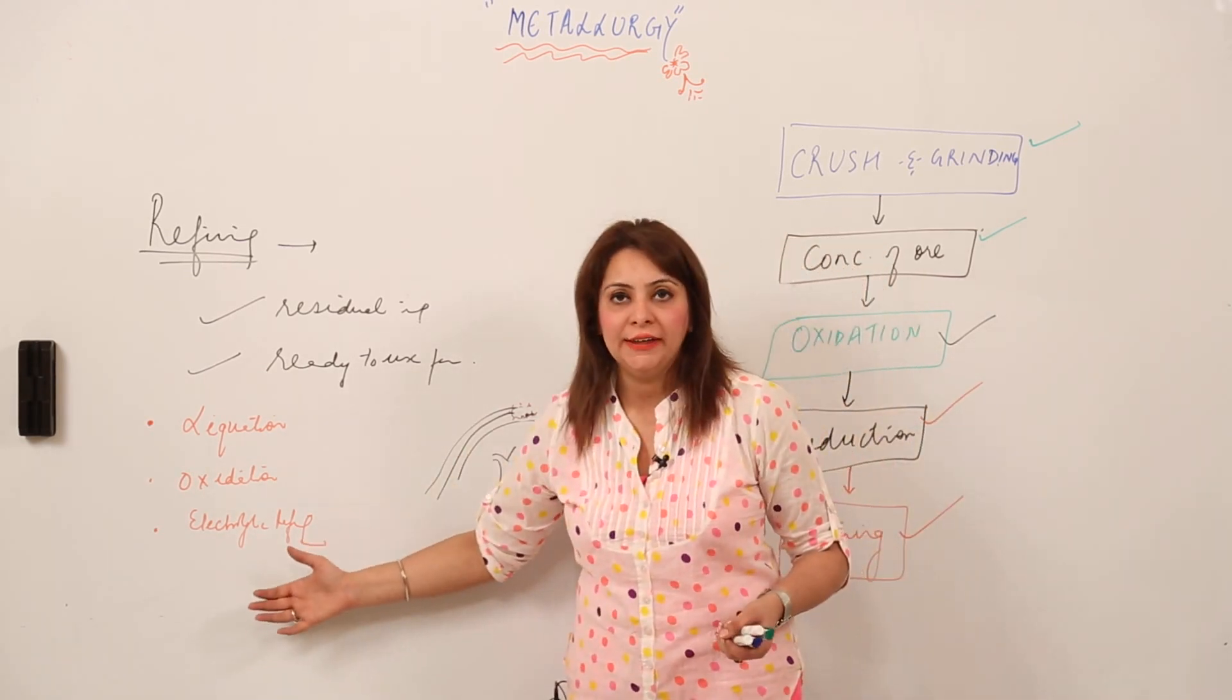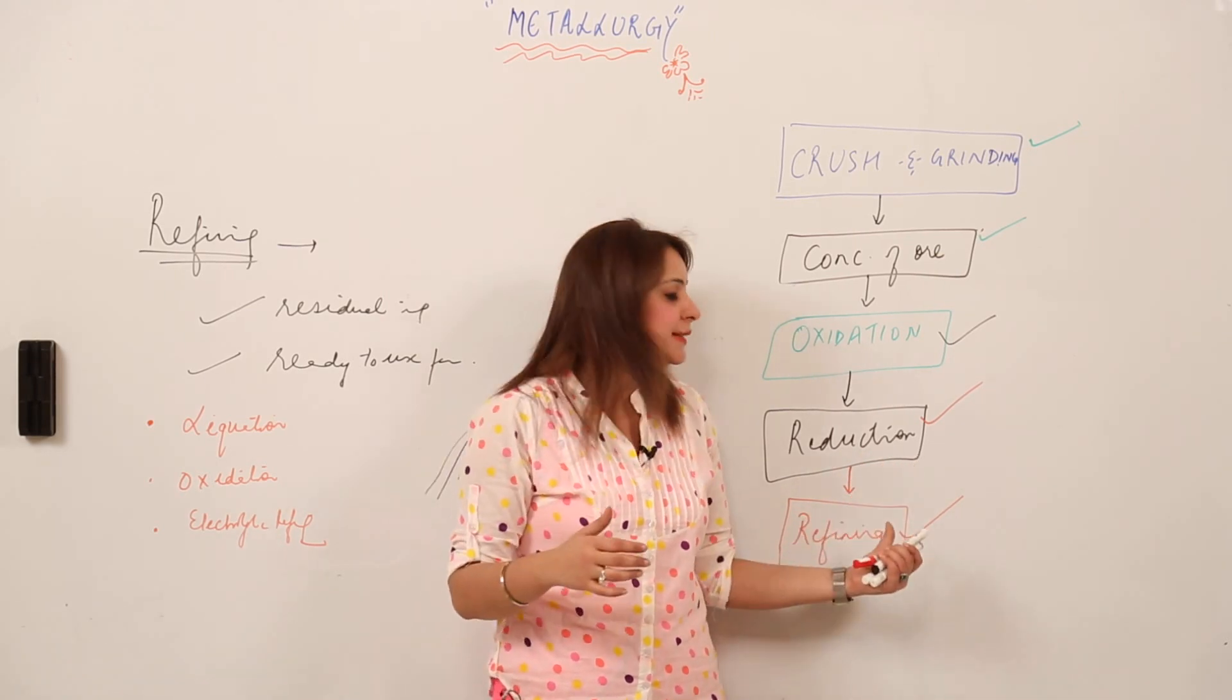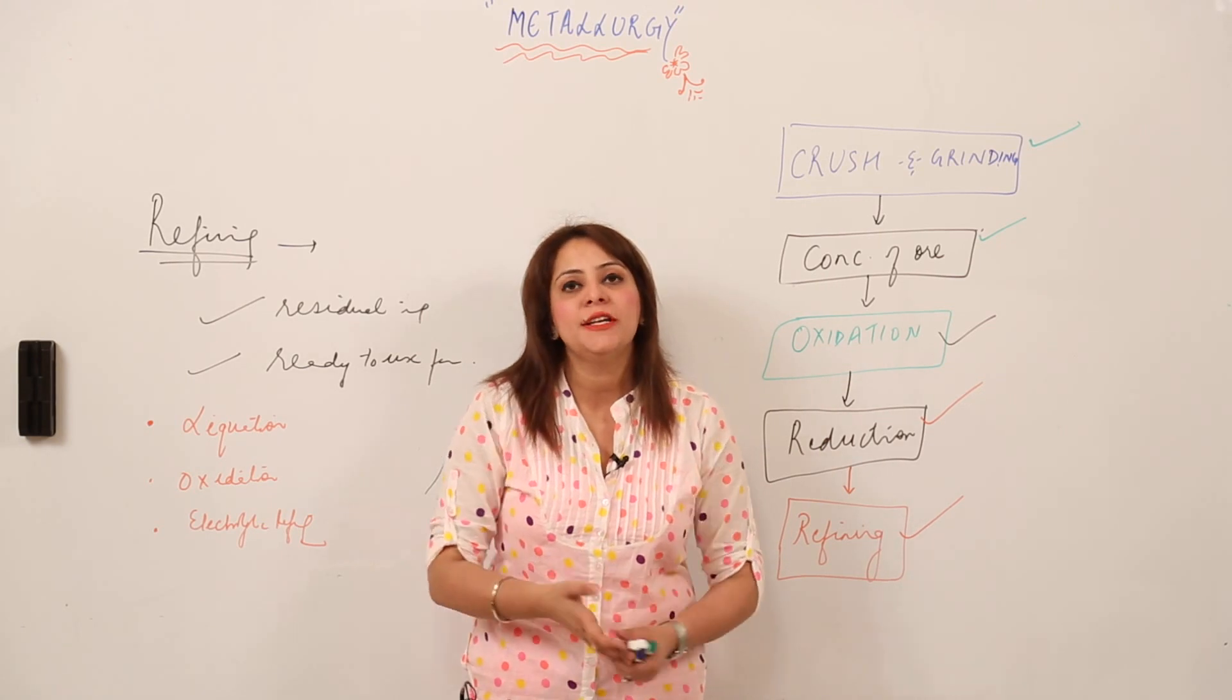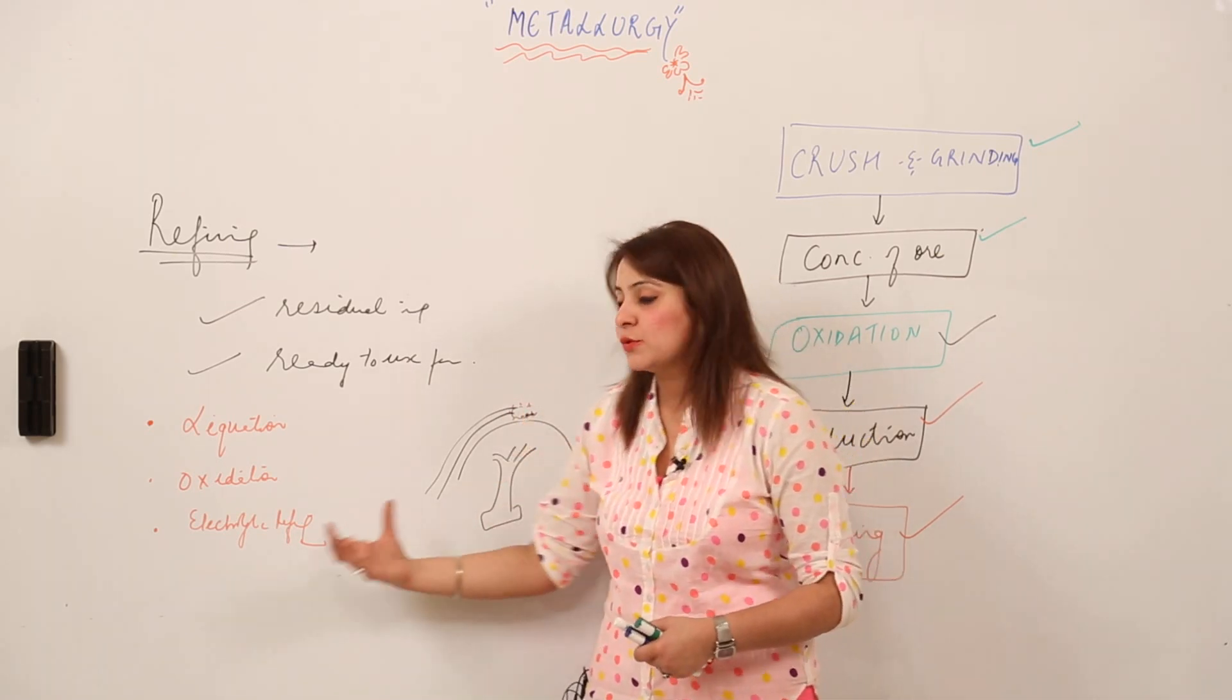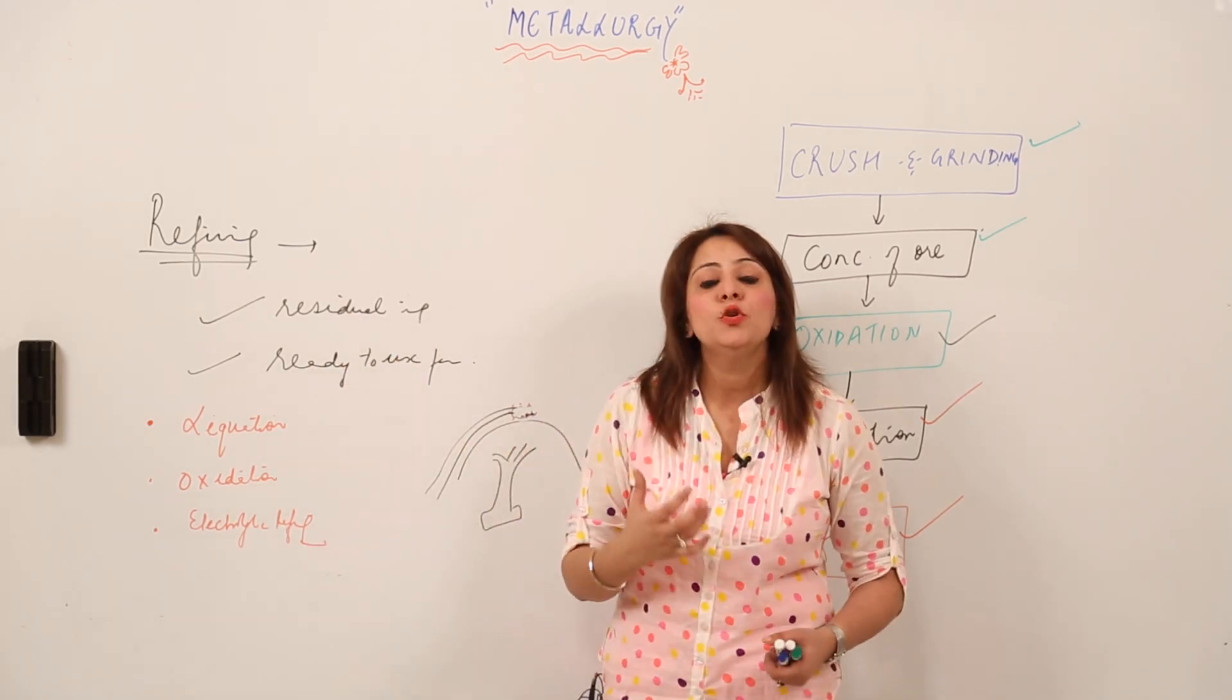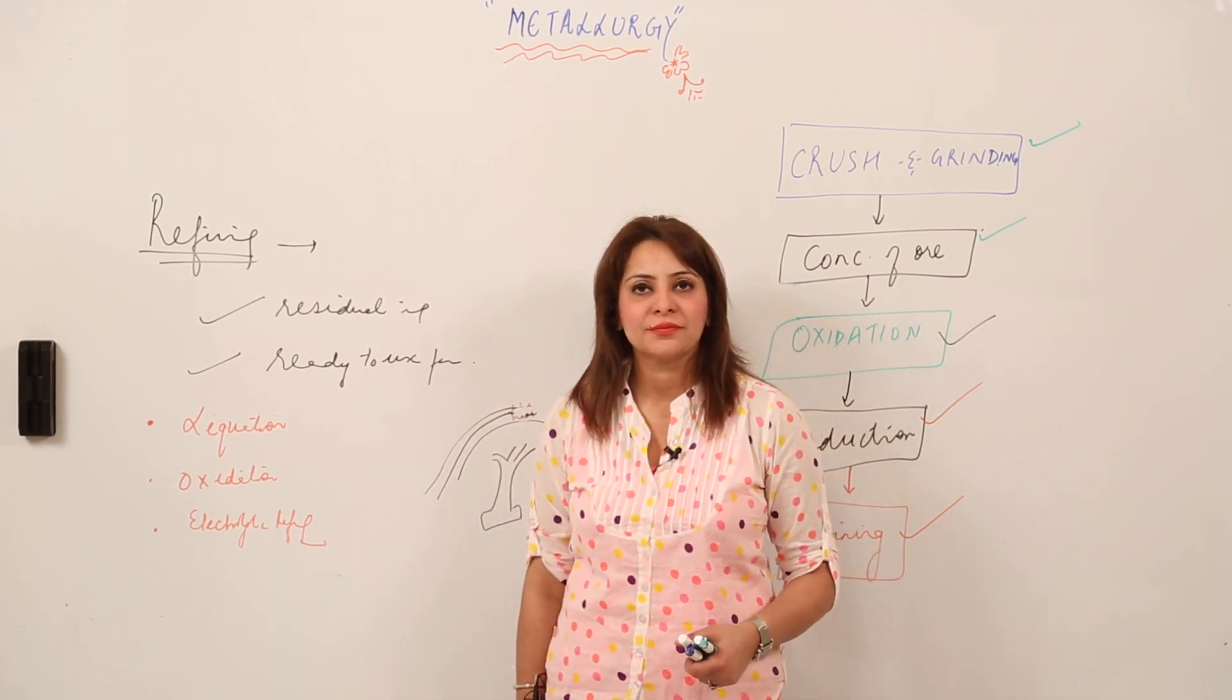Third is electrolytic refining. We did electrolytic reduction as well. After electrolytic reduction, the metal obtained is 99.9% pure, so this last step is not required. But if impurities persist, we can use electrolytic refining. It's the removal of residual impurities using electrolysis. It also serves as an application of electrolysis. Look at the board, I'm explaining electrolytic refining.